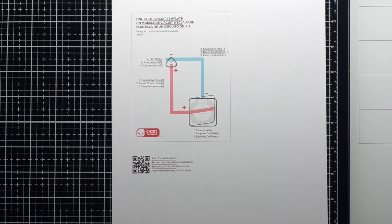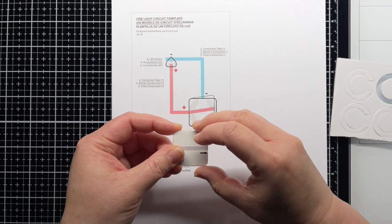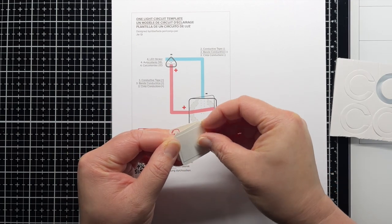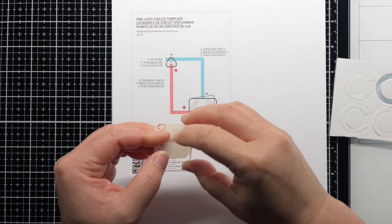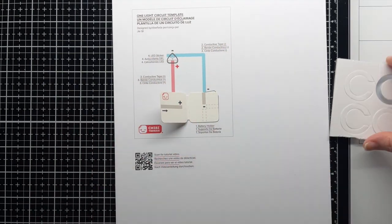To start, I've printed out the One Light Circuit template, and I'll be using the foam battery holder from Chibitronics and We Are Makers. Fold the cardstock piece in half along the score line, and remove the adhesive backing to adhere it to the square on your template. Make sure the opening is on the right, following the image on the template as a guide.